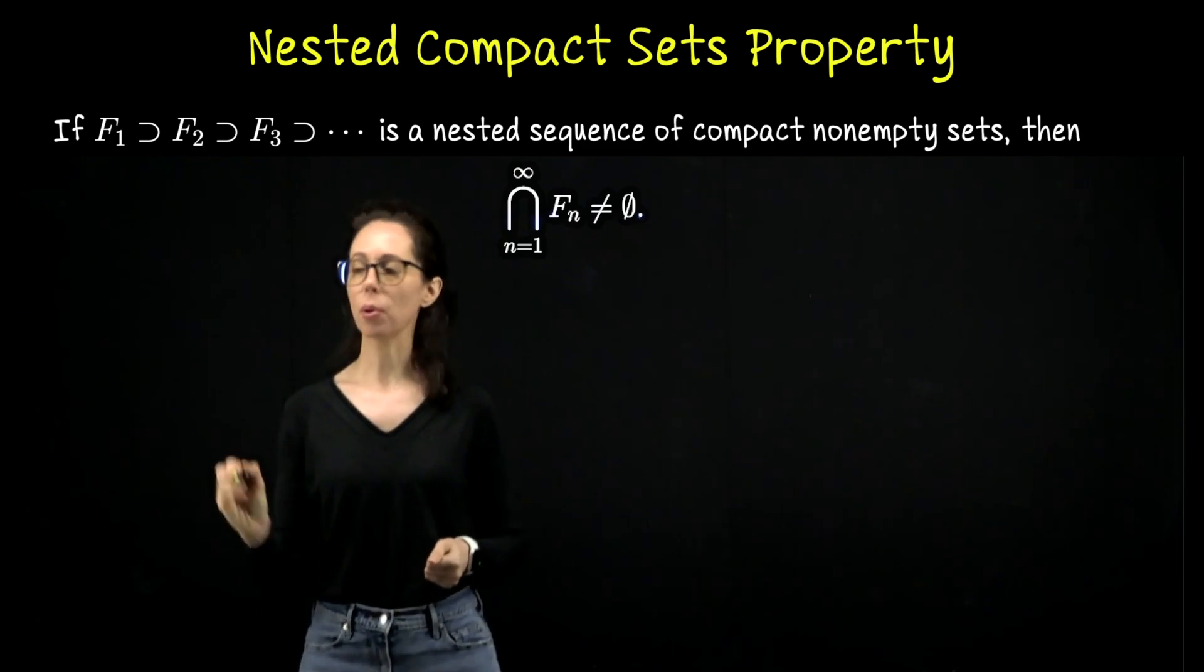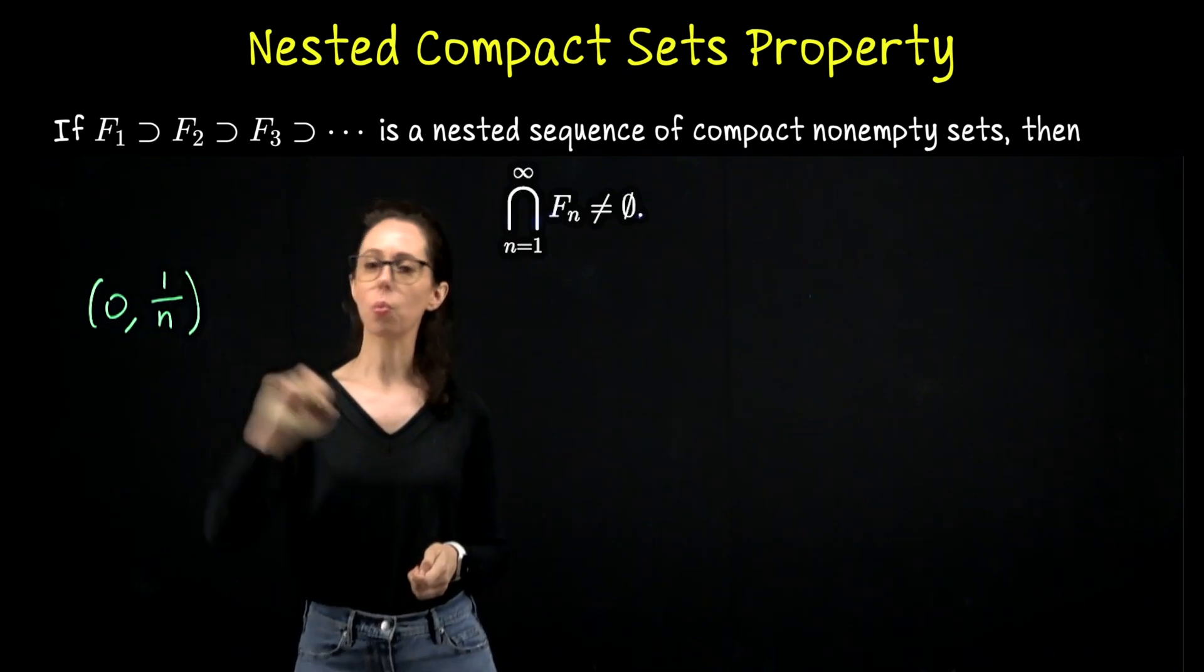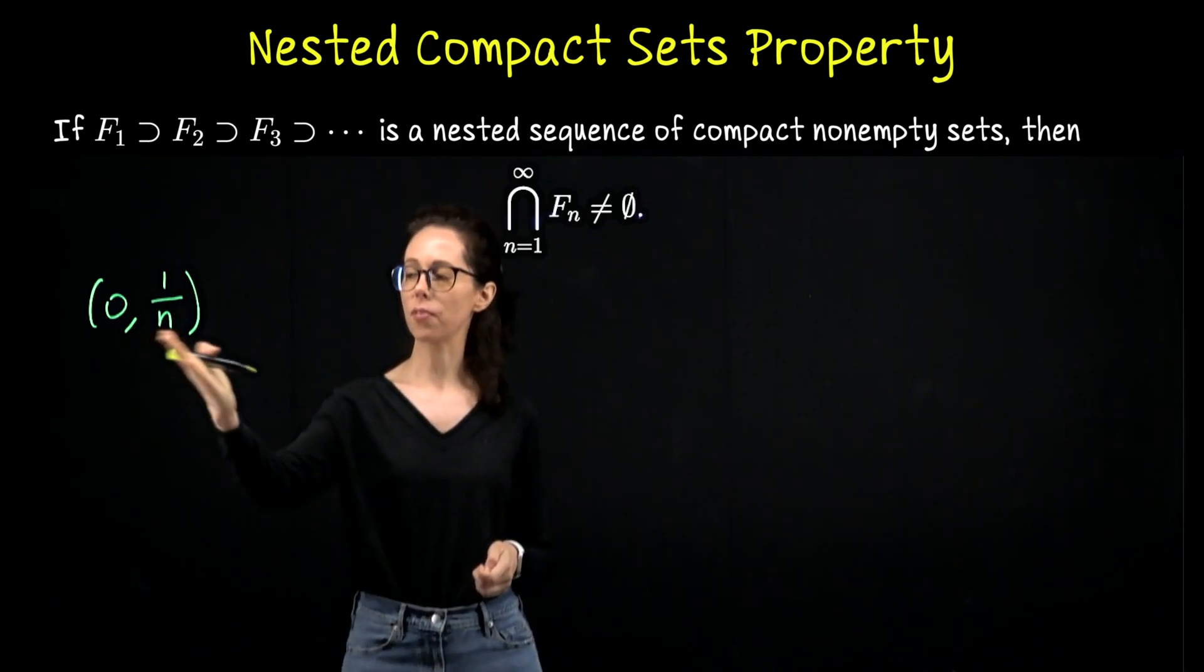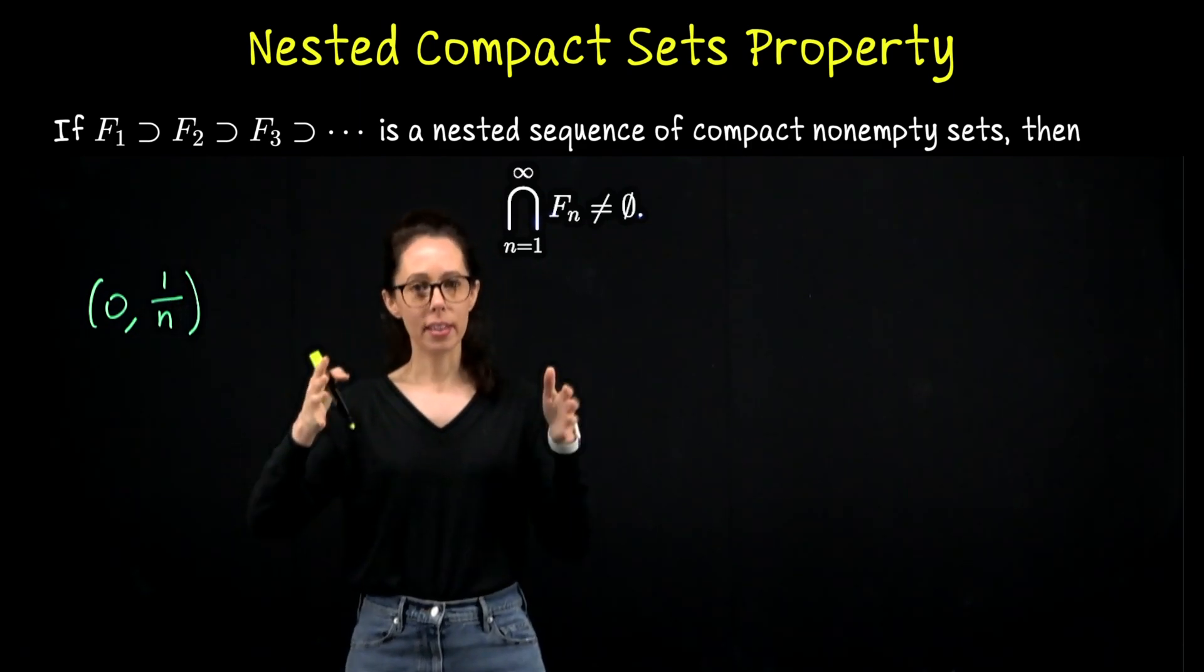Example number one: consider open intervals of the form (0, 1/n). So what I mean here is the first one is (0, 1), then (0, 1/2), (0, 1/3). These are nested.